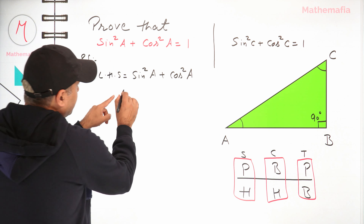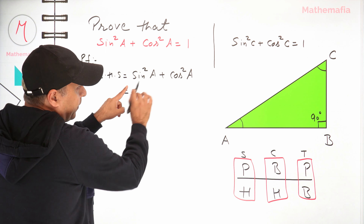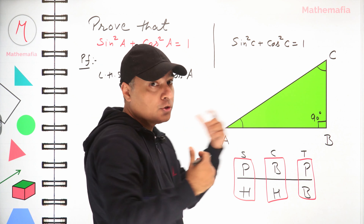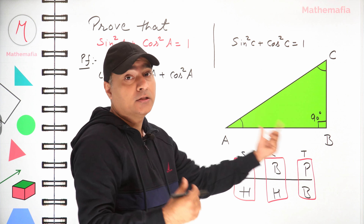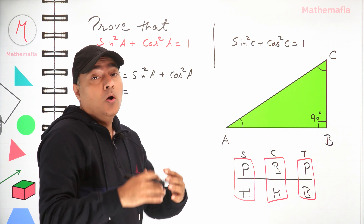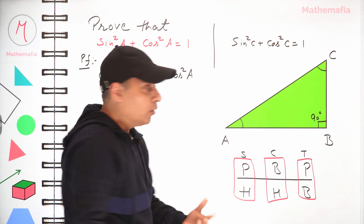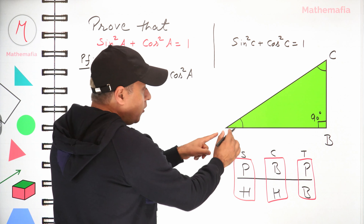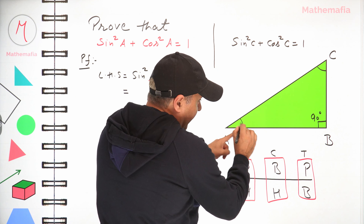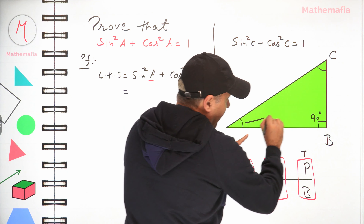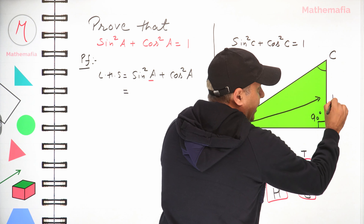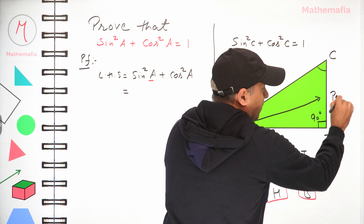So sin is perpendicular over hypotenuse. Now in any right-angle triangle there are always two perpendiculars — it depends which angle you are talking about. Right now we are talking about angle A, so the side in front of angle A will be considered as the perpendicular.